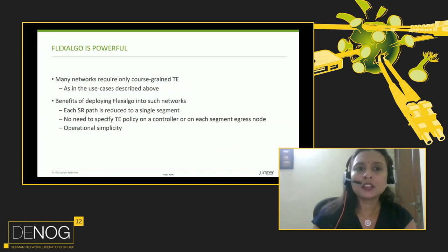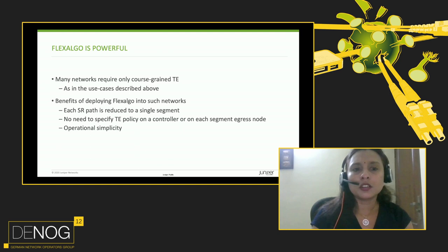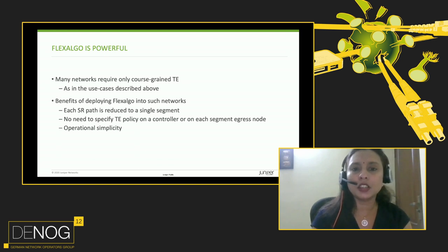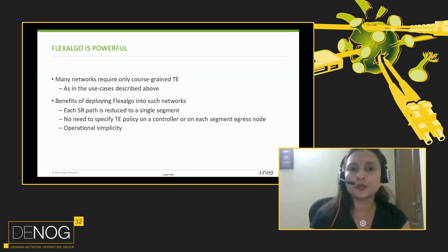Flex Algo is a very powerful feature. Many networks only require a very coarse-grain TE, and as in the use cases described above, Flex Algo solves these use cases in a very easy way, just using IGP extensions. The same solution could probably be achieved with segment routing TE by stacking a number of labels, but the advantage with Flex Algo is that you achieve the same thing with a single segment. There is no need to specify TE policy on a controller or do any kind of hidden computation — the paths are computed in IGP itself. This is operationally very simple because the Flex Algo definitions only need to be configured on one or two nodes, not necessarily on every node in the network.